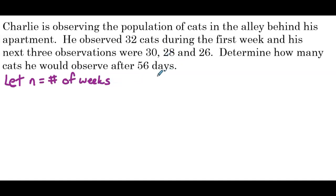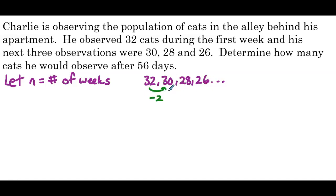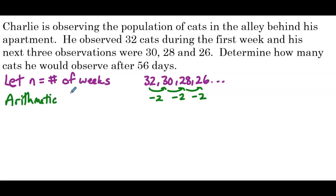If we write out this sequence, we have 32, 30, 28, 26, continuing on. Looking at the terms, we're decreasing by 2 each time — subtract 2, subtract 2, subtract 2. So that means we have an arithmetic sequence with a common difference of negative 2.